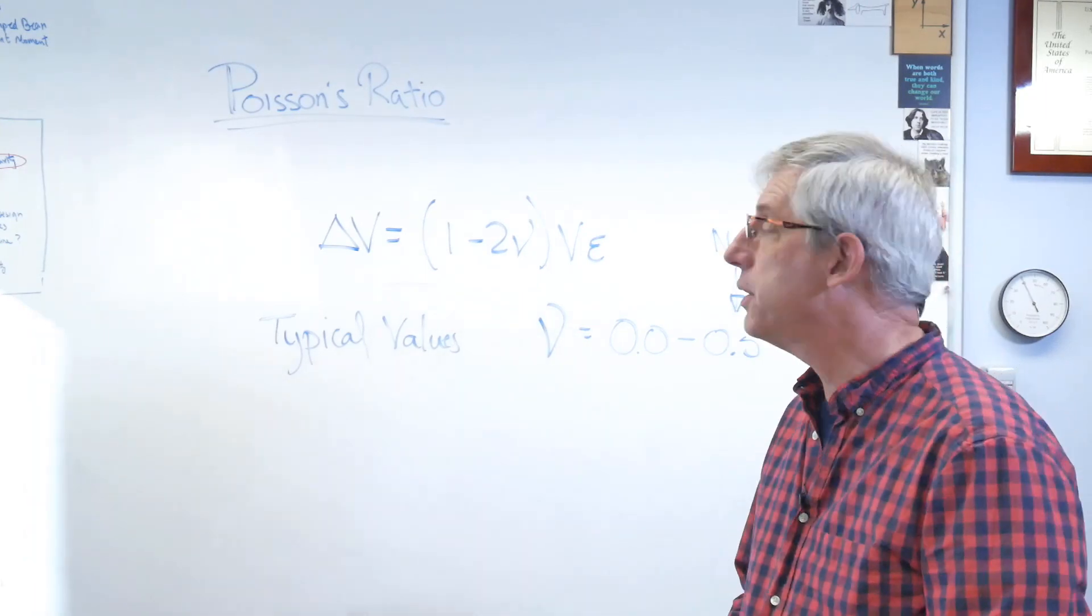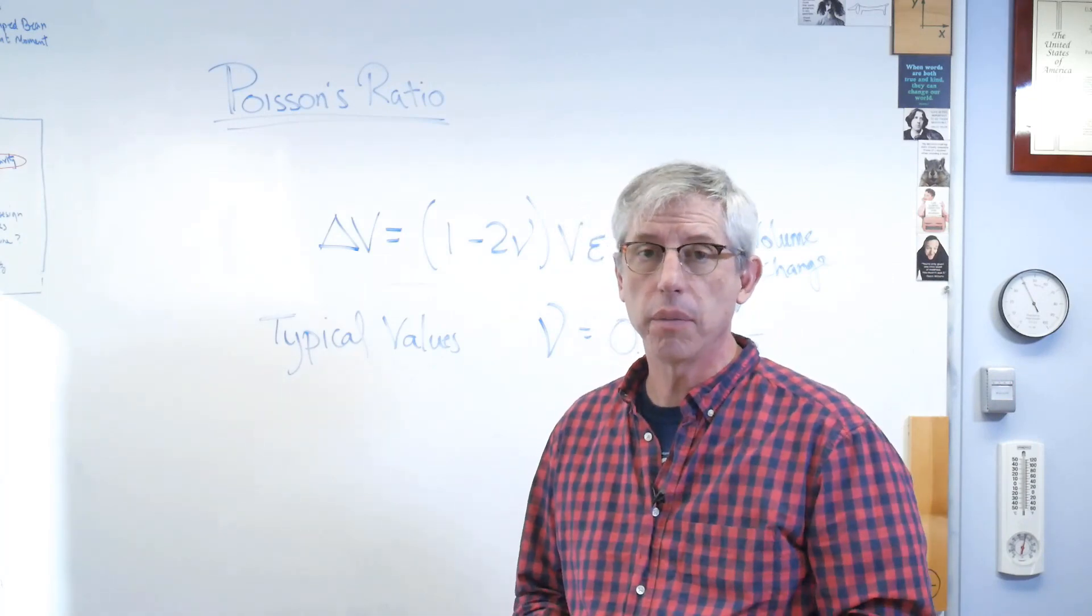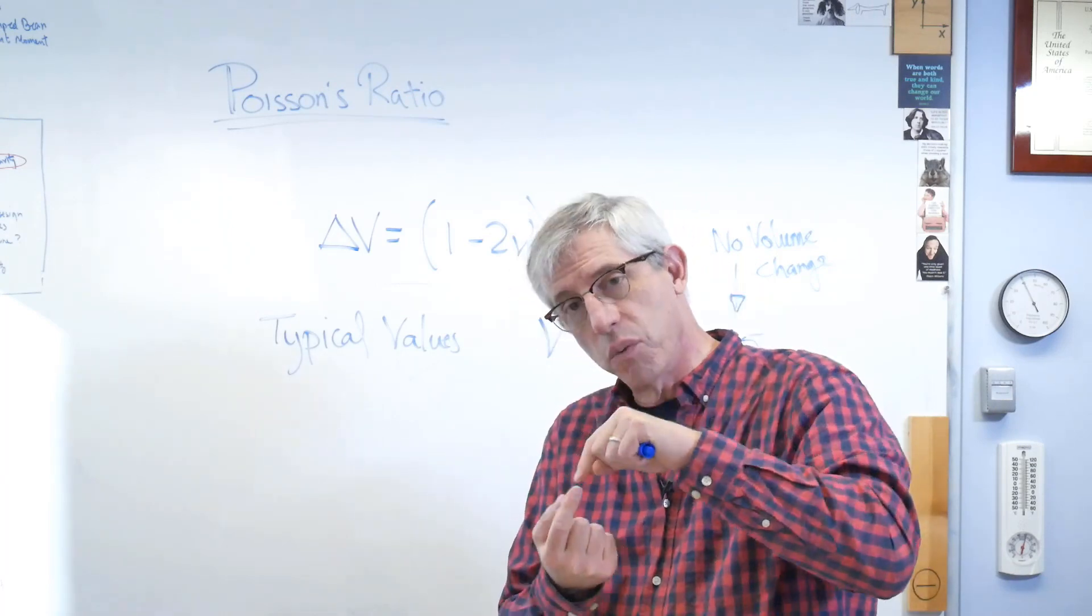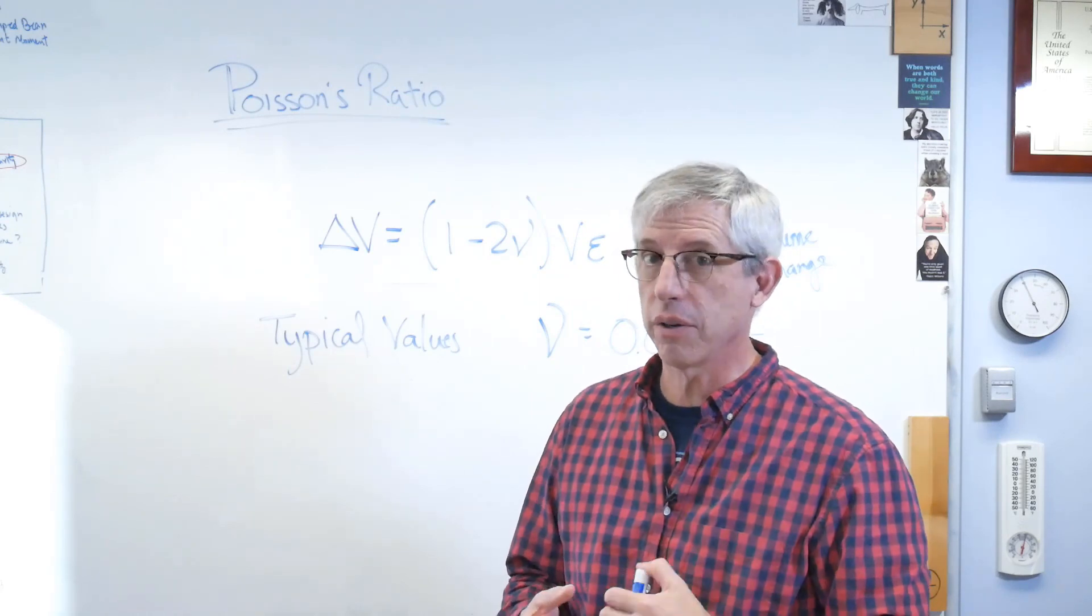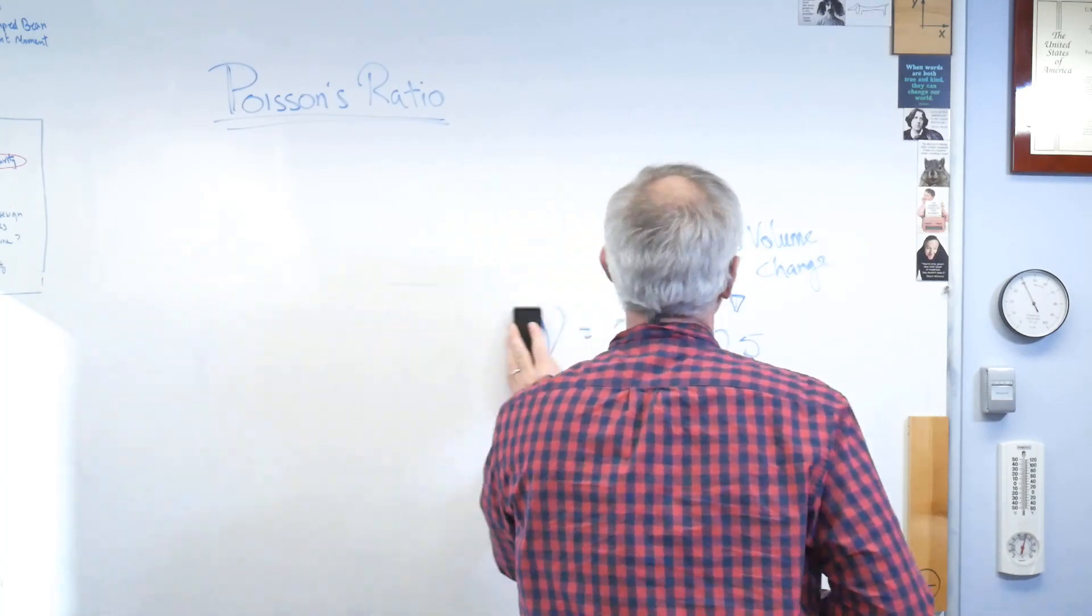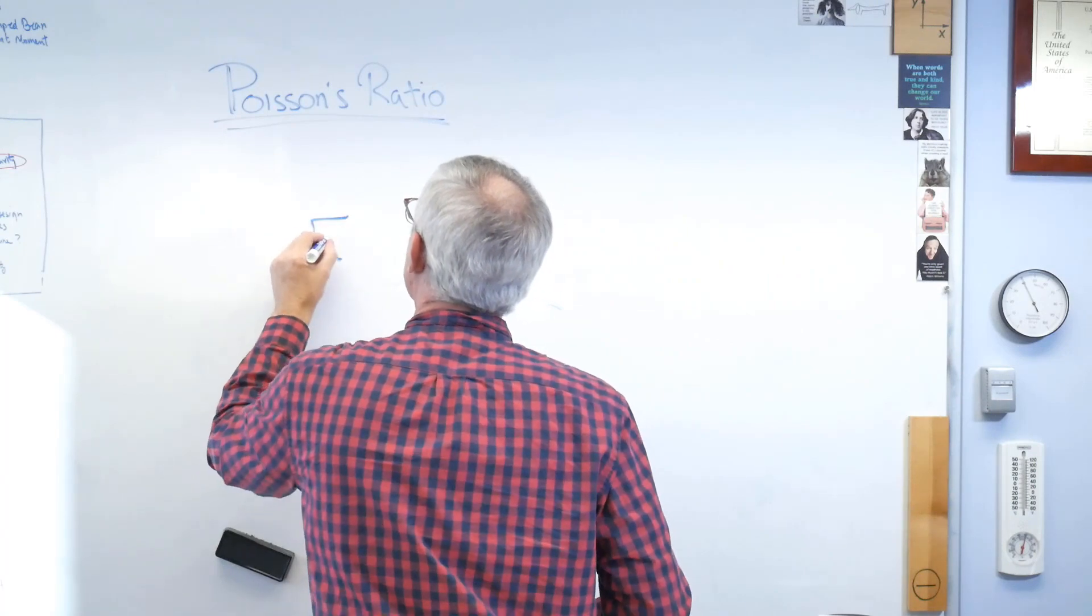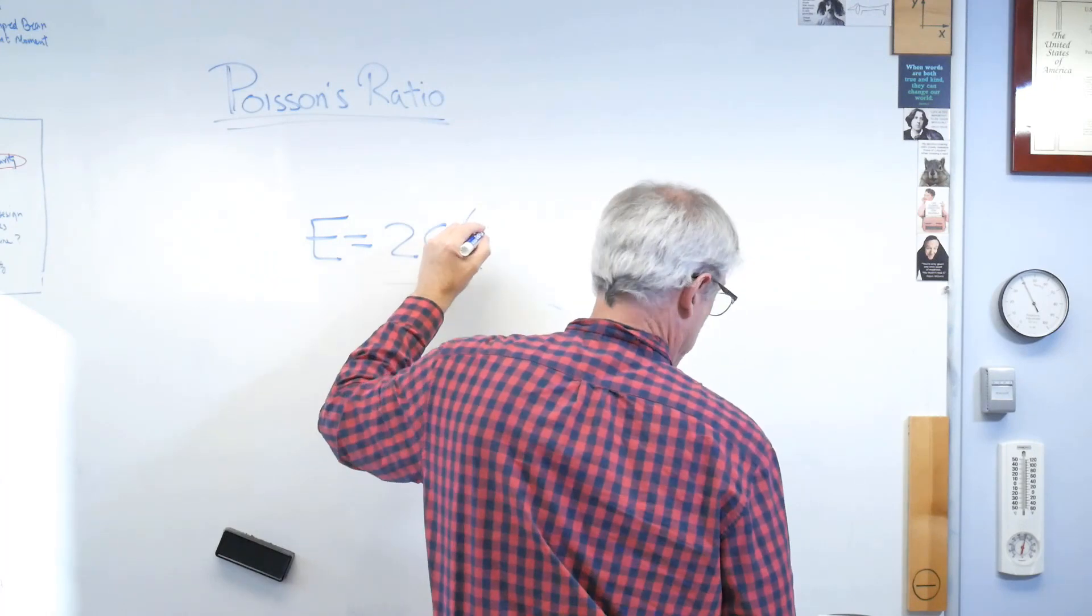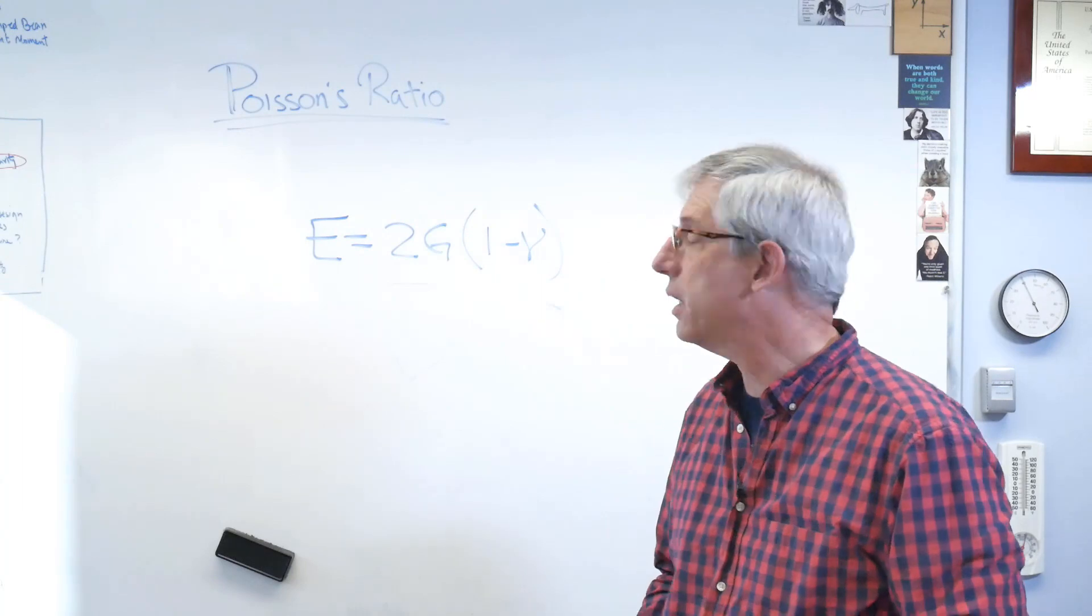Okay, and the last relationship you'll need is the relationship between the elastic modulus and the shear modulus. It stands to reason that if a material is stretching in one direction, compressing in the other, there's got to be some kind of shear action in there somewhere. And there is. So there's a simple relationship between elastic modulus and shear modulus. Elastic modulus is 2 times the shear modulus, or times 1 over 1 minus nu. So that's the relationship between elastic and shear.